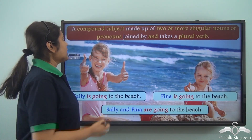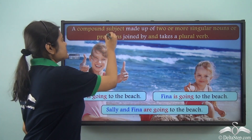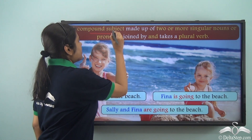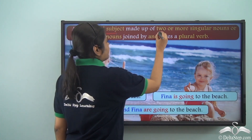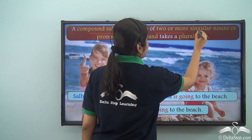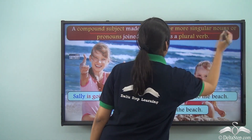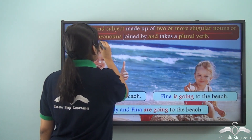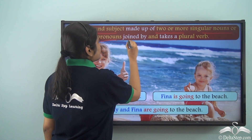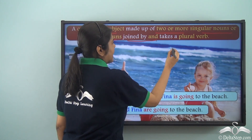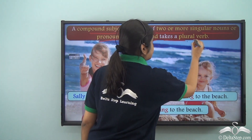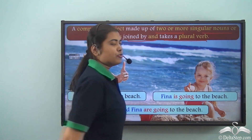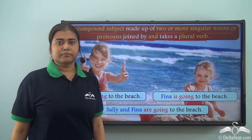So what is the rule? A compound subject made up of two or more singular nouns or pronouns joined by 'and' takes a plural verb.